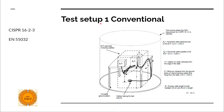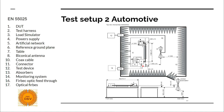Test setup number one — I named it conventional because it will be for most devices. All commercial and industrial devices are tested this way. We have a non-conductive table and a turntable that will rotate in the semi-anechoic chamber. We have specified distances that we need to maintain, and you can see the test volume — our antenna will measure this space. Also, if you have a floor-standing device you will put it on a Euro pallet and you will not have a table.